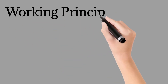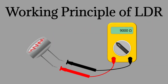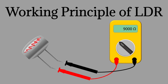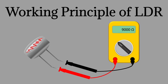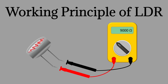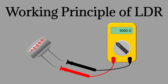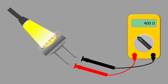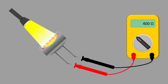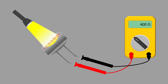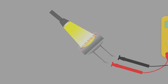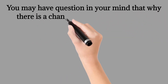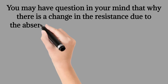Working Principle of LDR. The semiconductor material used to make an LDR is such that in the absence of light, the resistance of the material increases, as shown in the figure. The resistance decreases as light strikes on it, as shown in the below figure. Providing a power supply allows the current to pass through the circuit.